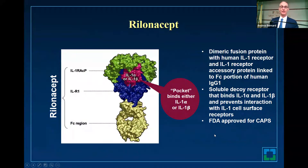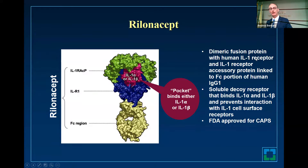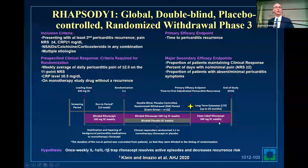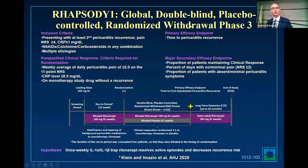Rilonacept is a different type of molecule — basically a dimeric fusion protein. It traps IL-1 alpha and beta. It's an old drug that's been around for the CAPS syndrome, which is an inflammatory syndrome in children. We did the Rhapsody trial. Very simplistically, this was a double-blind, placebo-controlled, withdrawal phase three trial. We took patients with recurrent pericarditis with multiple recurrences that were on standard of care. The hypothesis was: does this trap reduce active episodes and decrease recurrence?